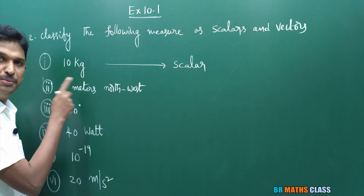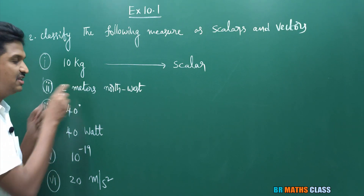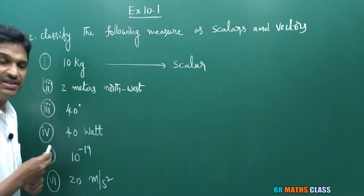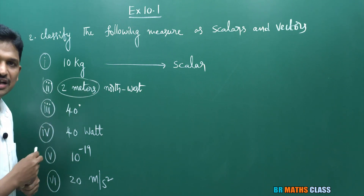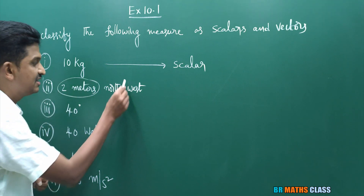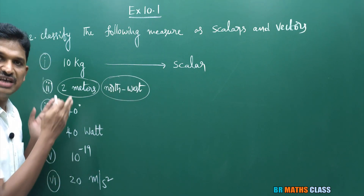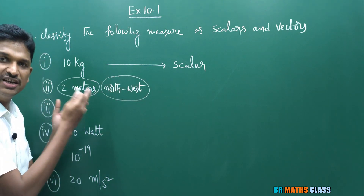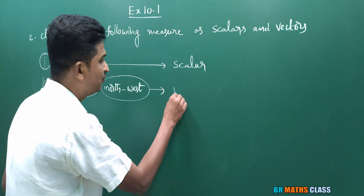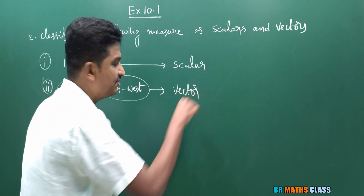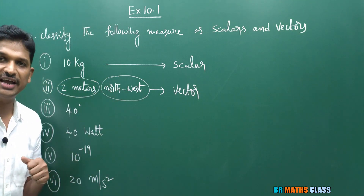Observe the second one: 2 meters northwest. Here, magnitude is present and direction — northwest — is also present. This is a physical quantity having both magnitude and direction, so this measure is a vector.